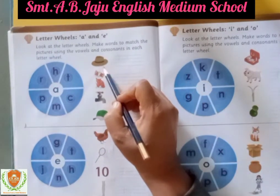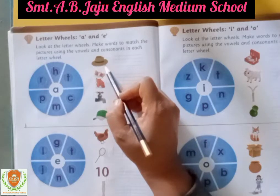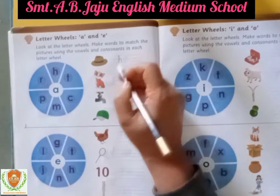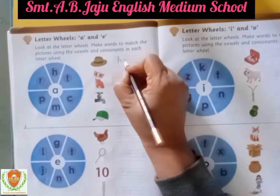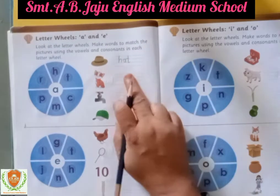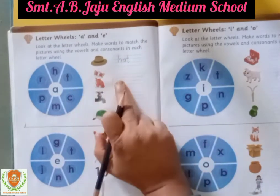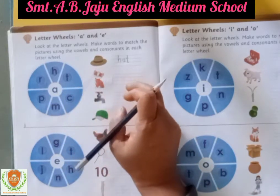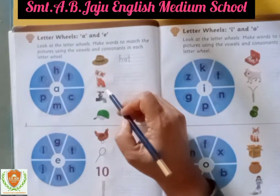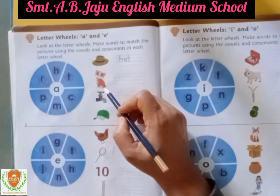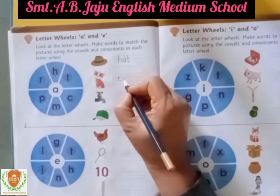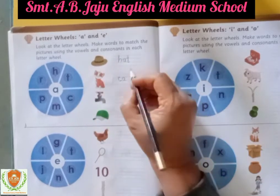Now, which picture is this? This is the picture of hat. What is hat? Hat. So write down here: H, then A, then T. Hat. H.A.T. Hat. Now this is the picture of cat. So we have words hat and cat.